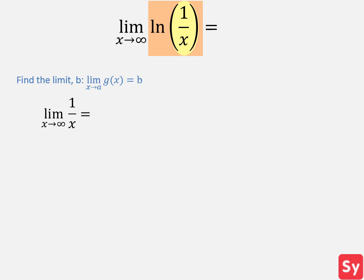We have the limit of 1 over x as x approaches infinity. We'll use substitution and substitute infinity in for x. The limit b is 0.